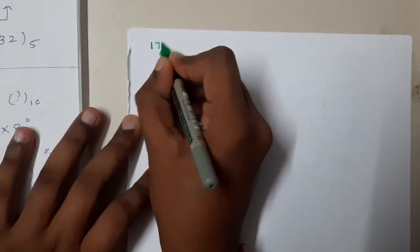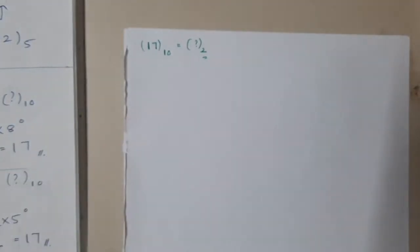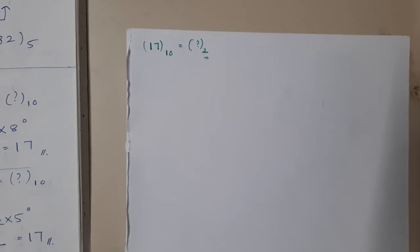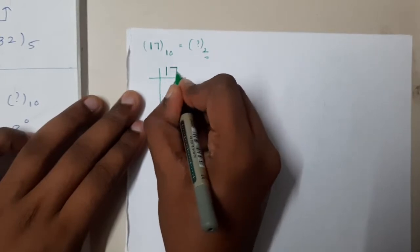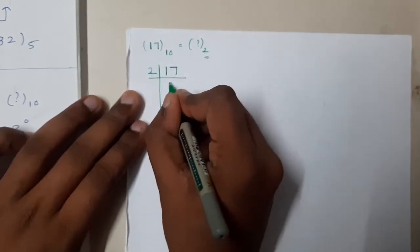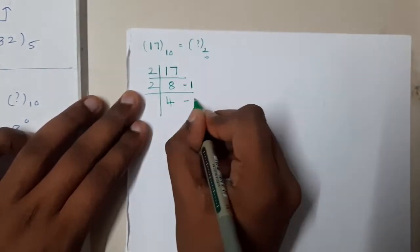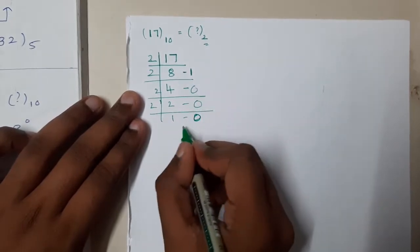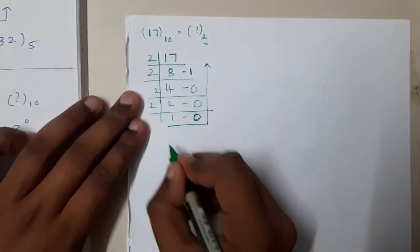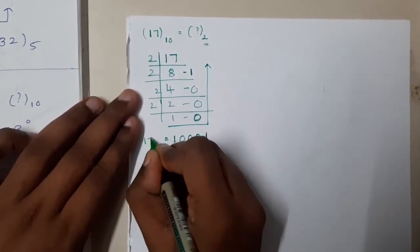Base 2 is nothing but binary — we are converting a decimal number into its binary representation. For 17, we perform repeated division by 2. Writing the remainders: 17 ÷ 2 gives remainder 1, then 8 ÷ 2 remainder 0, 4 ÷ 2 remainder 0, 2 ÷ 2 remainder 0, 1 ÷ 2 remainder 1. Reading remainders from bottom to top gives 1 0 0 0 1.